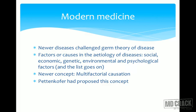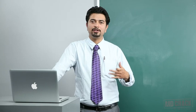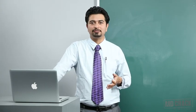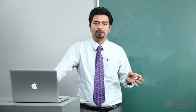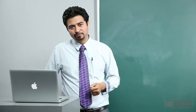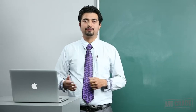Coming to modern medicine — newer disease challenges arose for the germ theory of disease. Newer factors came into play: social factors, economic factors, genetic factors, environmental and psychological factors. Newer concepts include multifactorial causes of disease. Pettenkofer proposed this theory a long time back — in fact, he proposed it when germ theory was still on the rise. Unfortunately, germ theory was a big hit and this concept, though very right, got submerged. Although Pettenkofer was right, he could not propagate his theory much because at that time germ theory was taking its foothold.